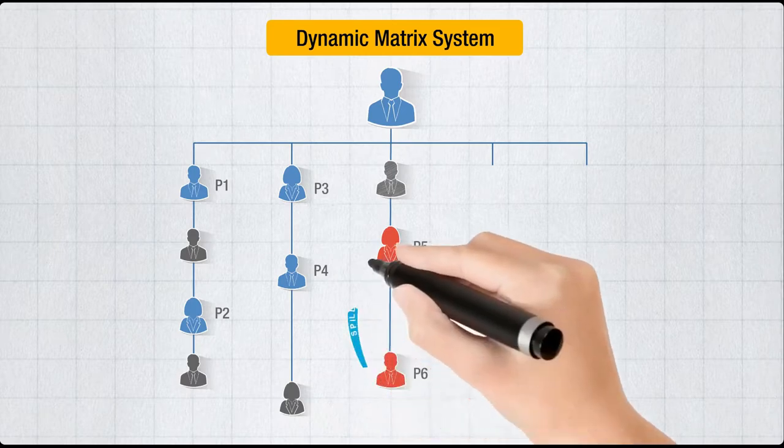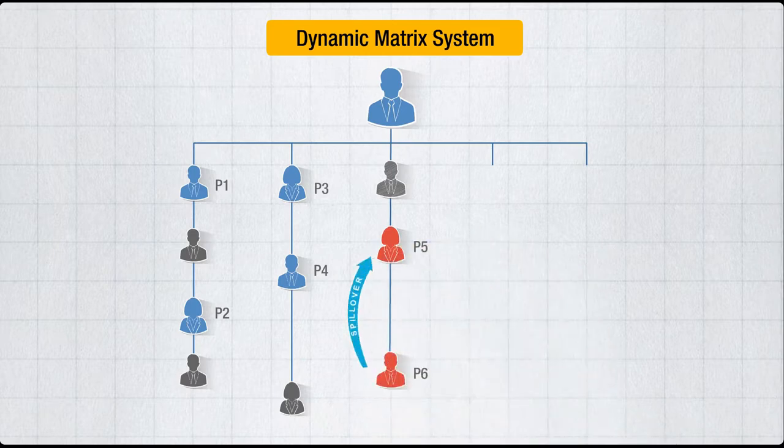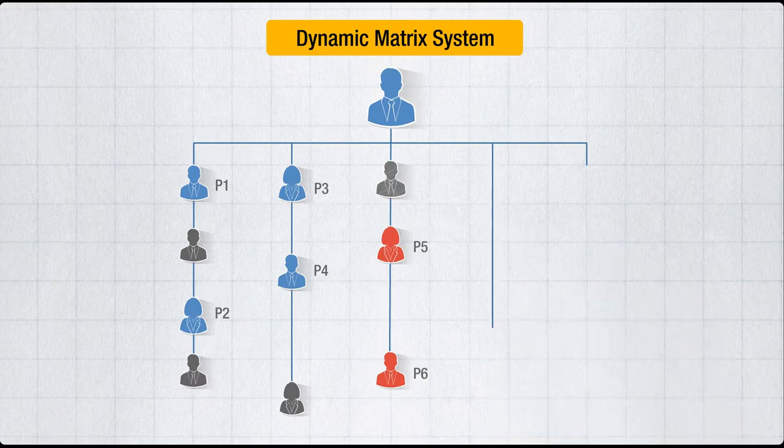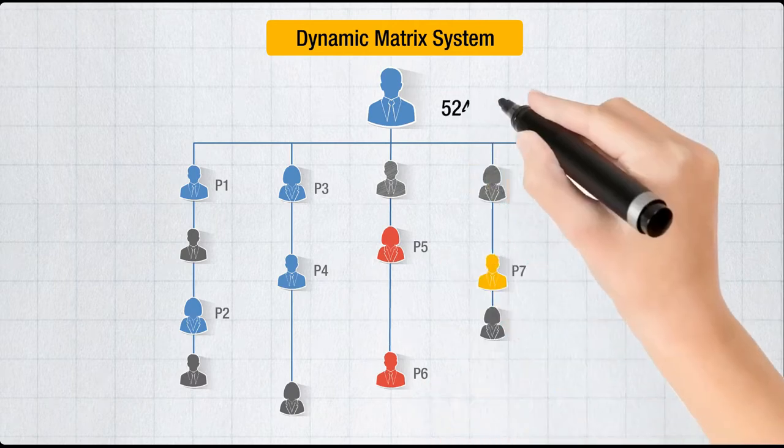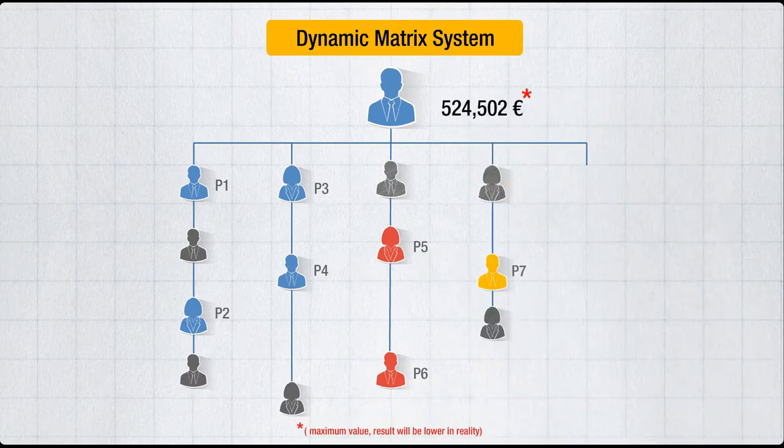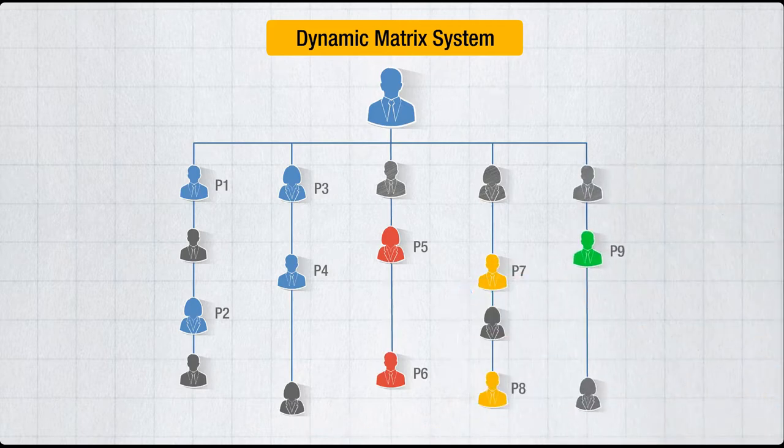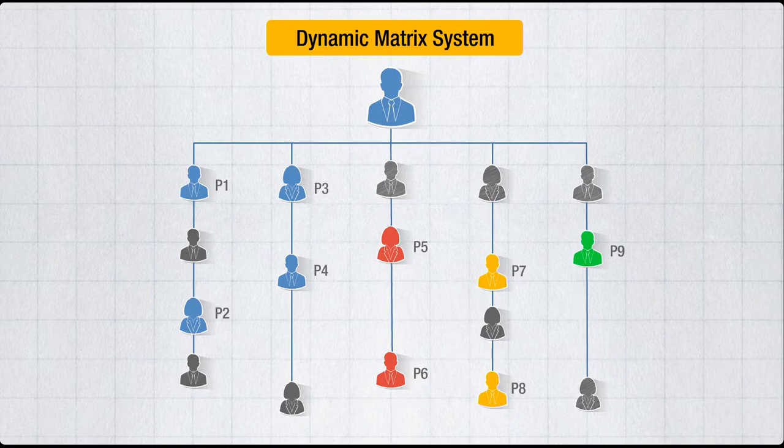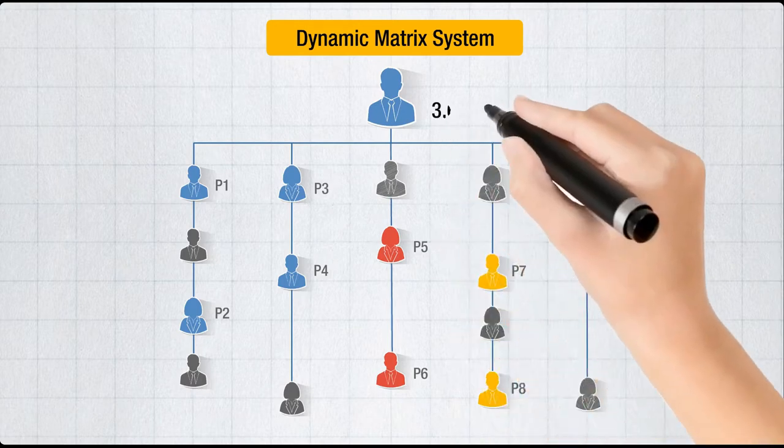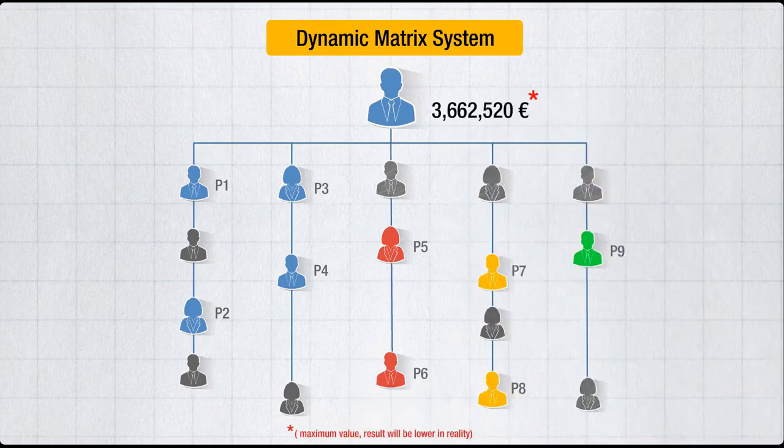With person seven, your potential income grows to half a million euros a month. Sounds good. Person eight supports person seven, and your ninth person opens your fifth leg, expanding your matrix to the maximum, giving you a potential income of more than 3.6 million euros a month.